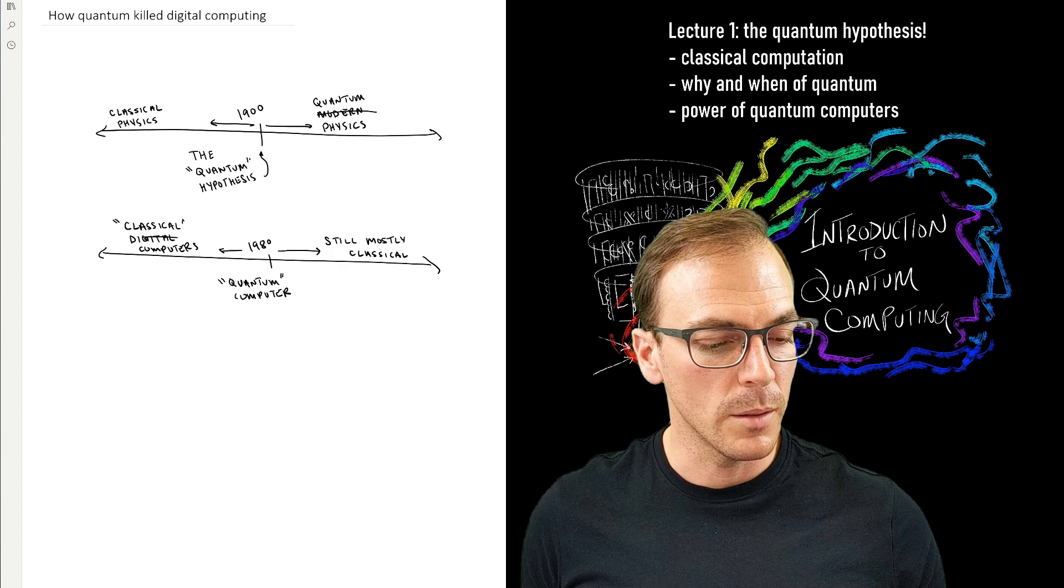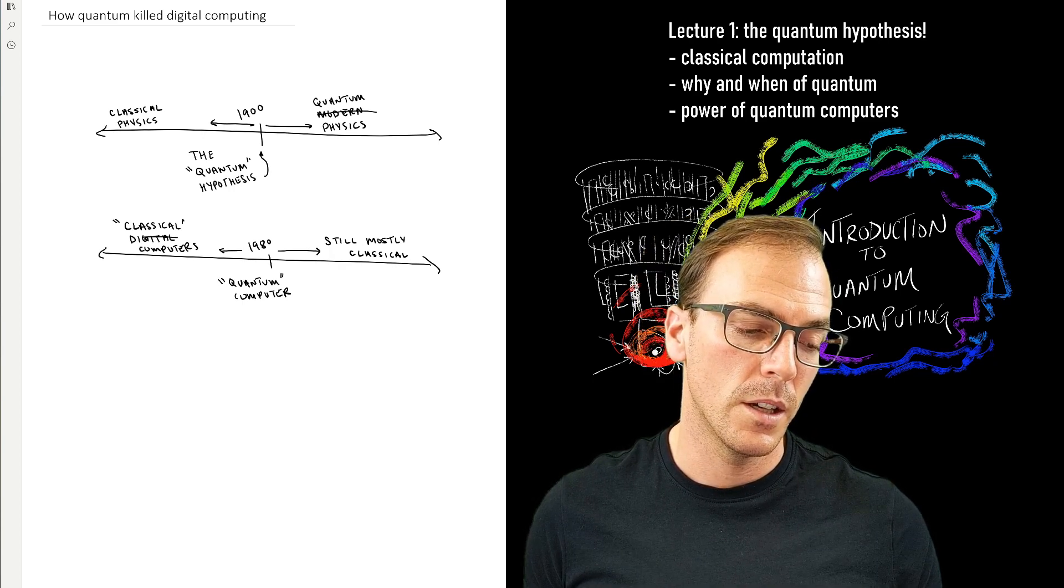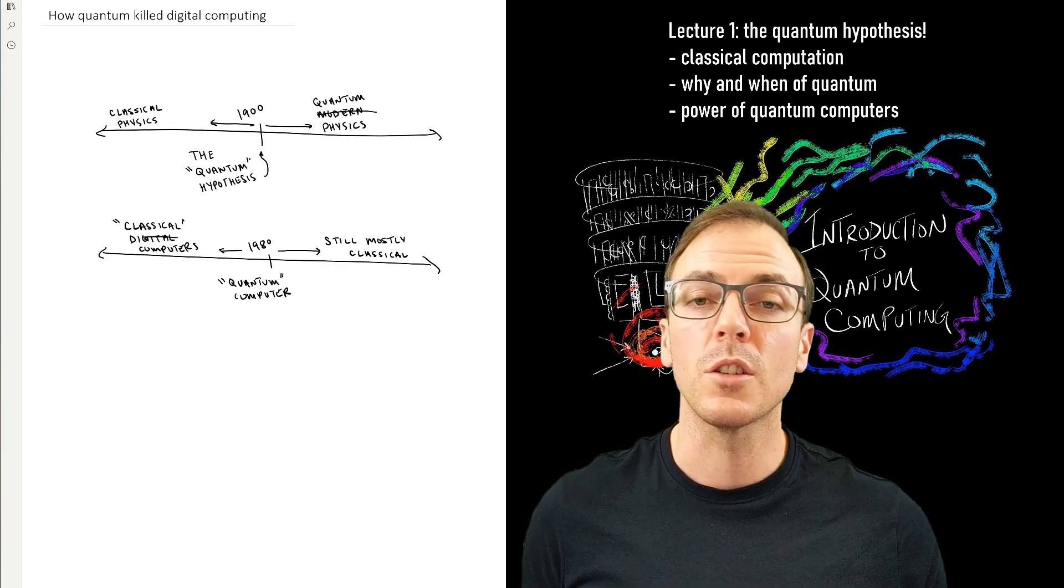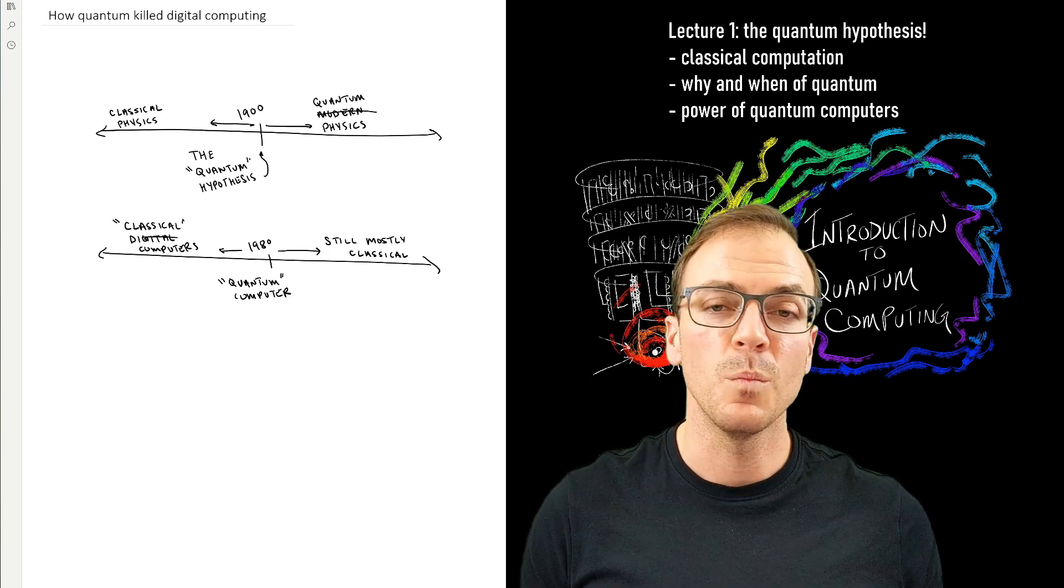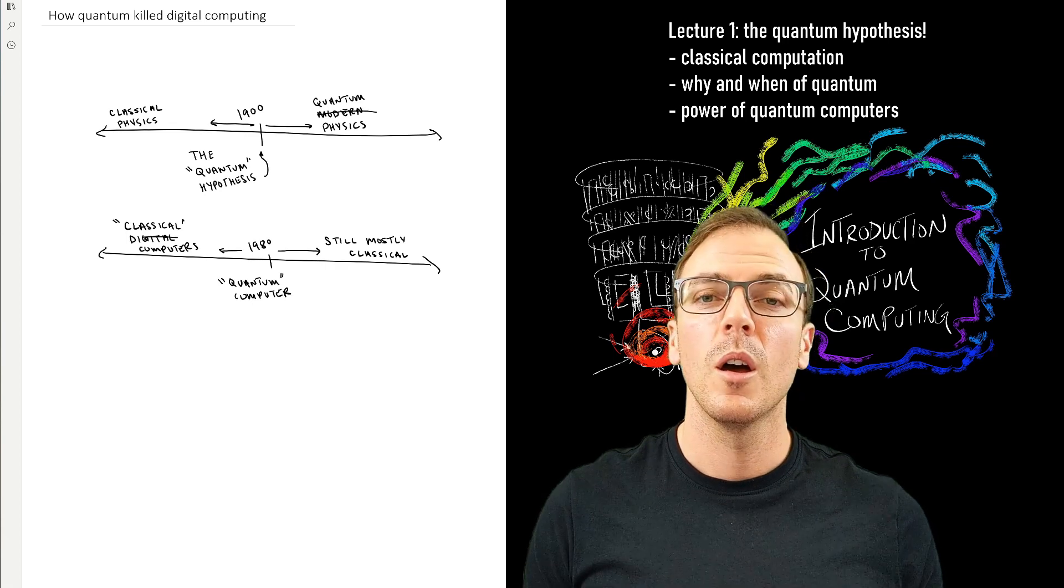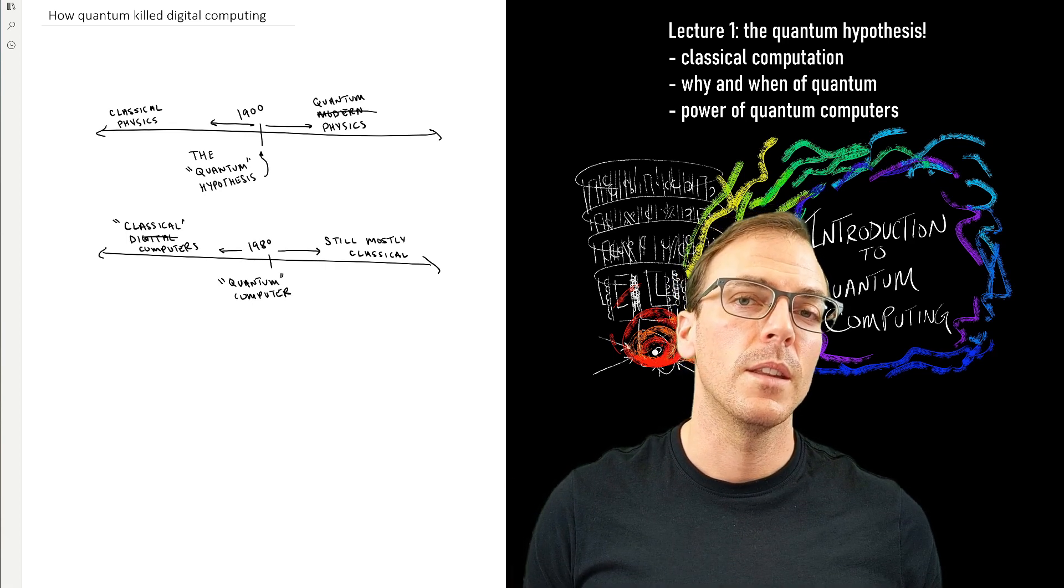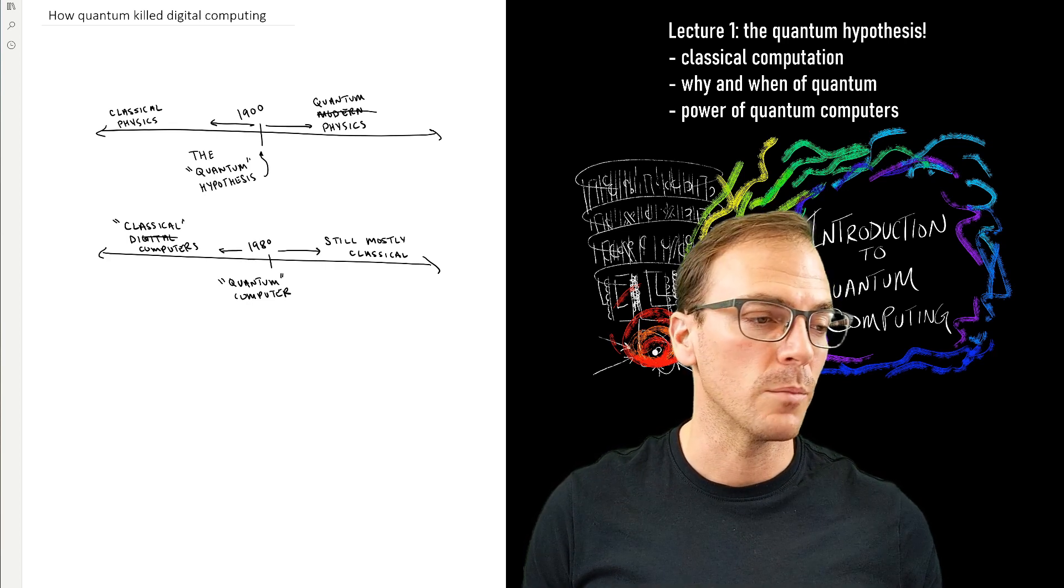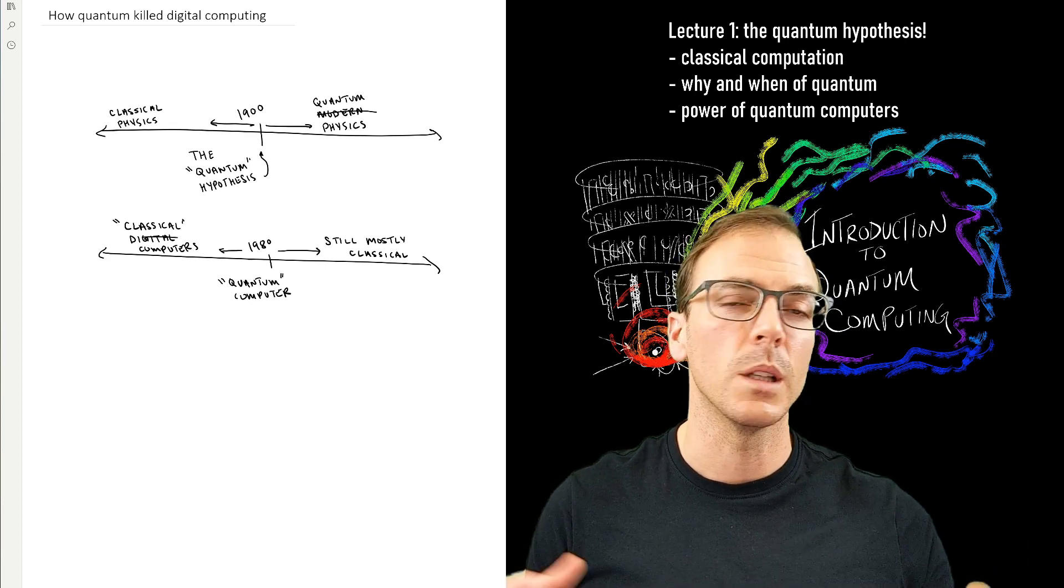But in some sense, there is a stronger connection of digital computers to classical physics. Now, yes, we have these miniaturized devices with billions of transistors, but in order to perform those computations, they don't have to be miniature. They don't have to be transistors. This could all be done with giant machines made of woods and bolts and pulleys and levers.